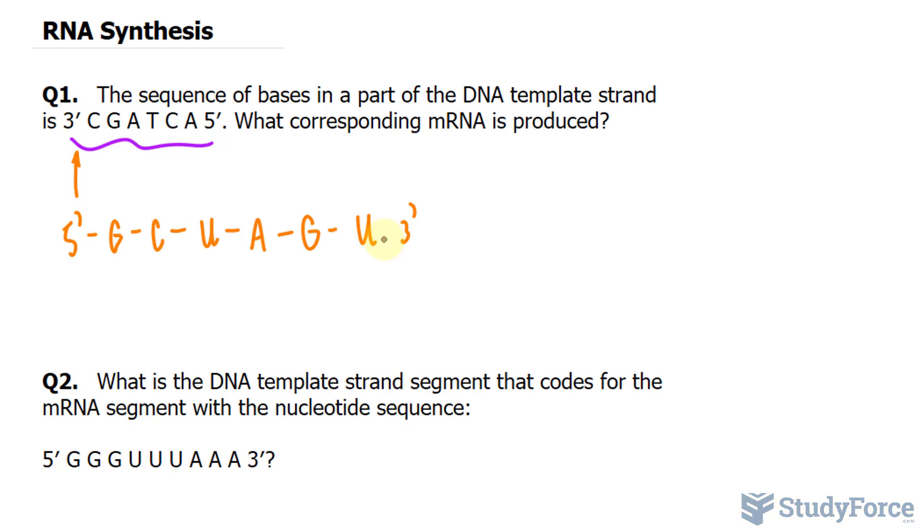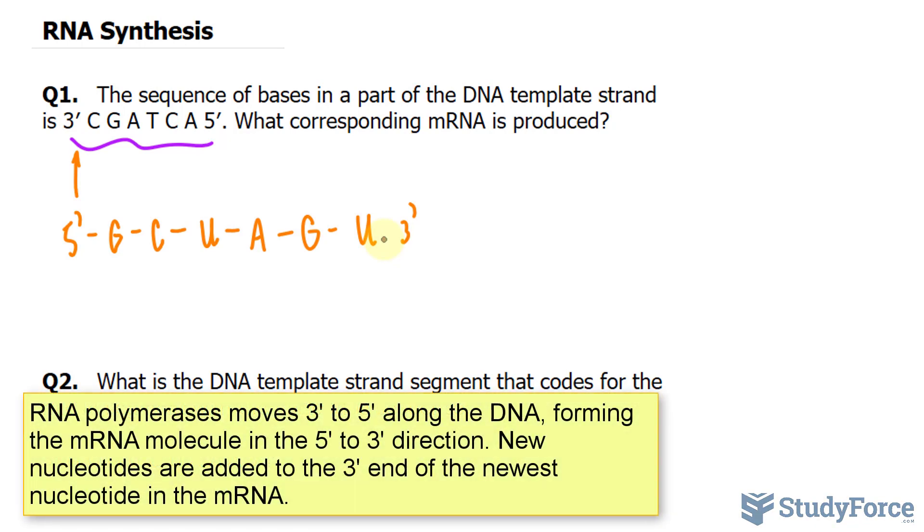So you will need to remember that when RNA is being made, you have to start at the 3' end of the template DNA strand. And the RNA polymerase enzyme moves from the 3' end to the 5' end.